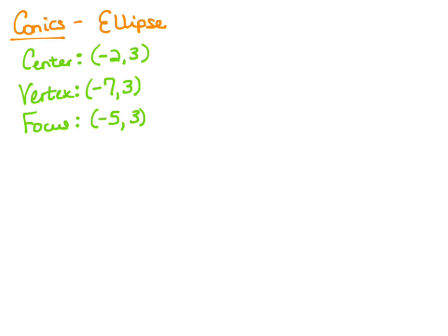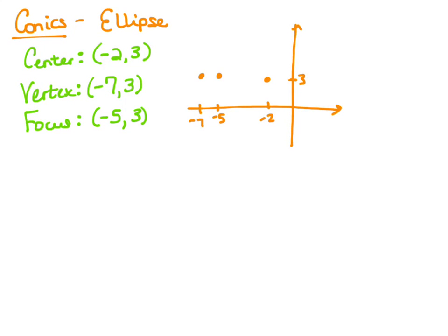This time we're graphing an ellipse. It has a center at (-2, 3), a vertex of (-7, 3), and a focus at (-5, 3). So I'm going to start with the center at (-2, 3). Then I have a vertex out at negative 7 and a focus at negative 5. We have a horizontal ellipse here. To get the other vertex at the end of the major axis, that's going to be 5 units away from negative 2 in the other direction, so my other vertex would be at 3.